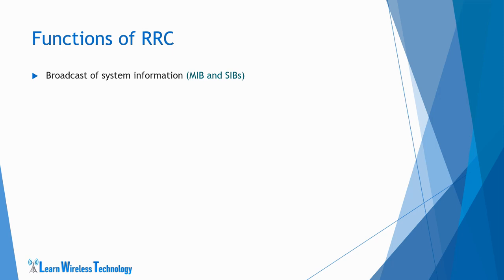Broadcast of system information related to access stratum and non-access stratum. It includes information such as cell selection and reselection parameters, handover parameters, neighbor cell information, etc. These information are included in the system information messages which are MIB and SIBs.